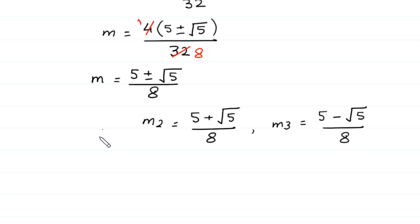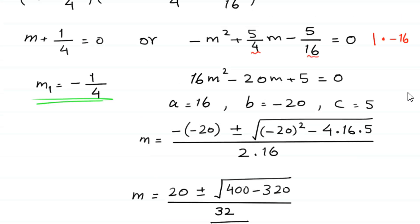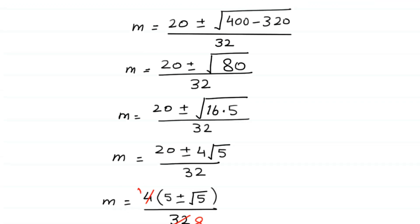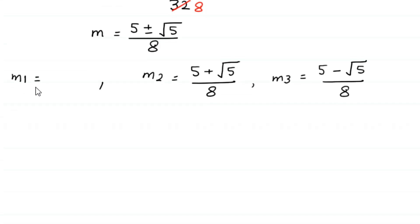The value of m₁ is negative 1 over 4. So these are the three solutions of this equation.